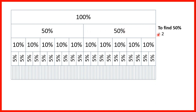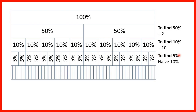This is useful because if we want to find 50% of a number we can divide by 2. If we want to find 10% we can divide by 10, because 10 10% bars are the same as one 100% bar. To find 5%, it's easier to first find 10% by dividing by 10 and then divide that by 2. And if we want to find 1% we can divide by 100.